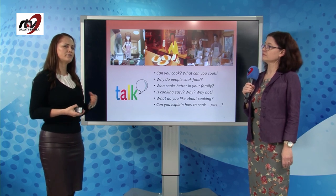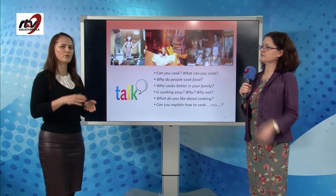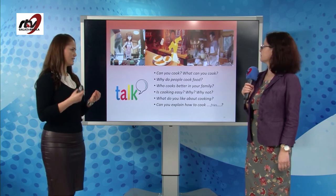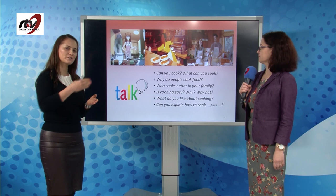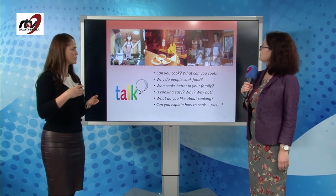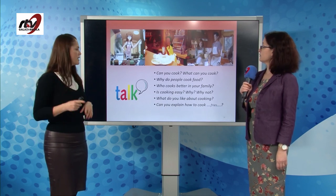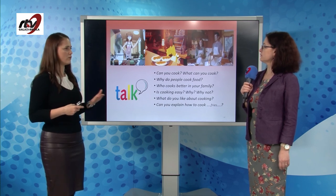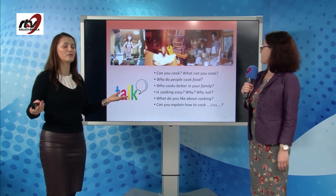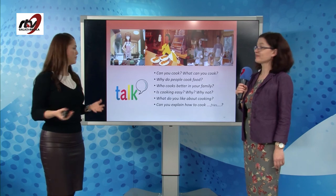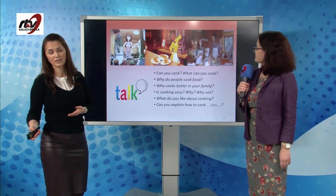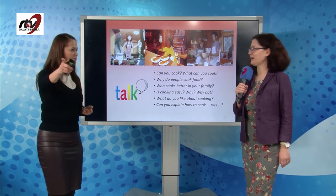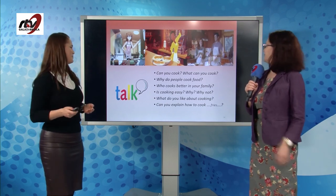Can you explain how to cook fries? Well, first, as we said before, you have to wash the potato, peel the potato, and then you slice it and cut it into smaller, long pieces. Then you fry them in oil and you serve with whatever you like — with cheese or with some chicken. I'm hungry!